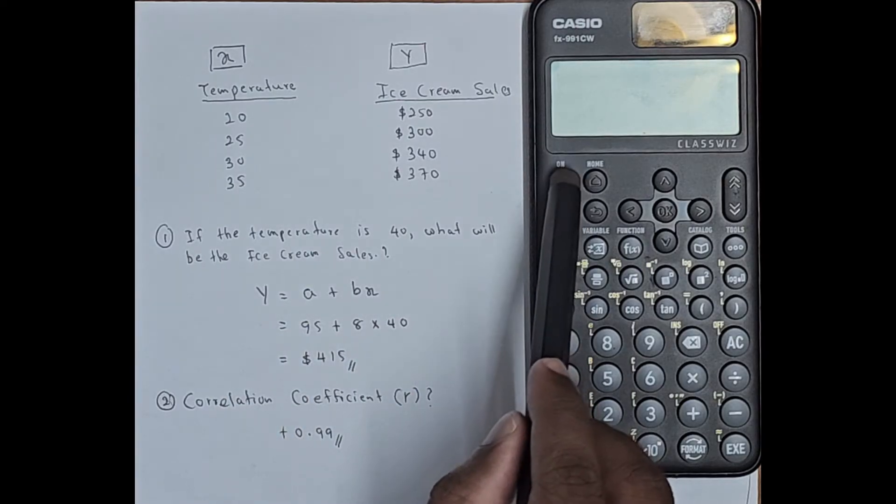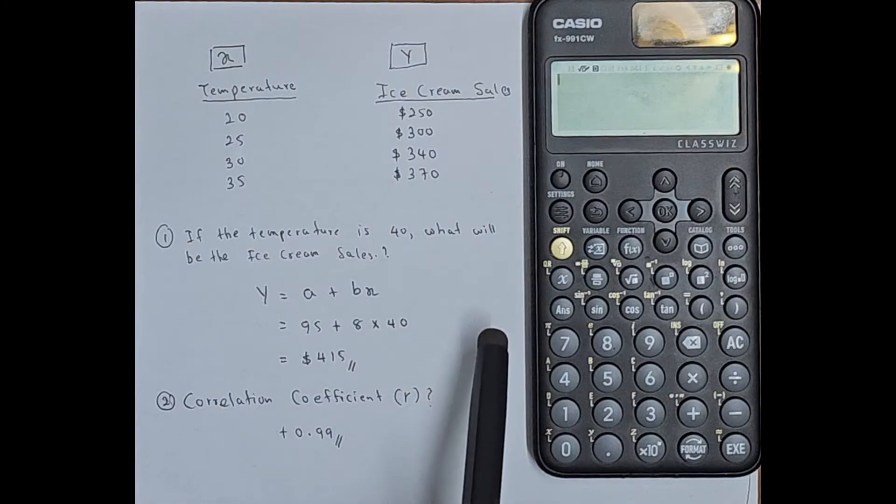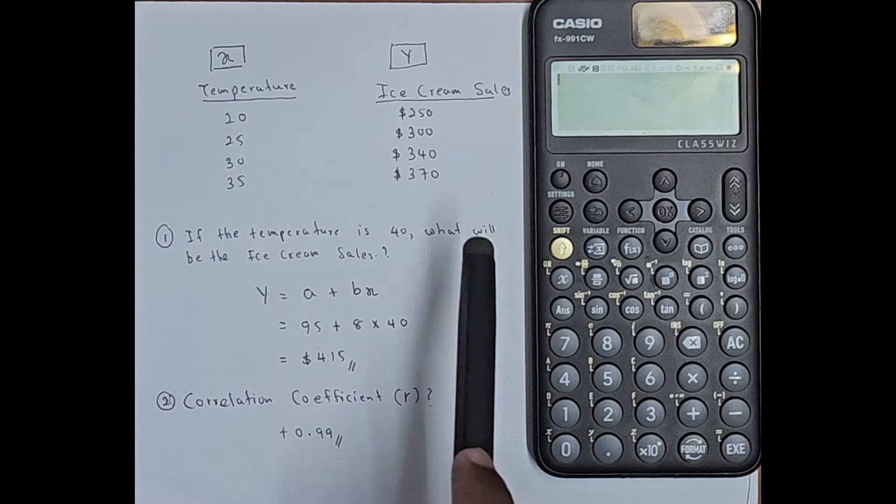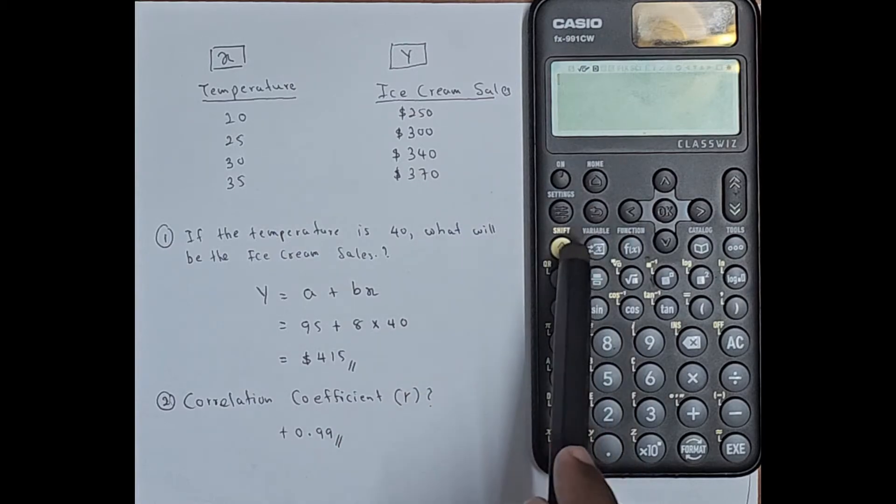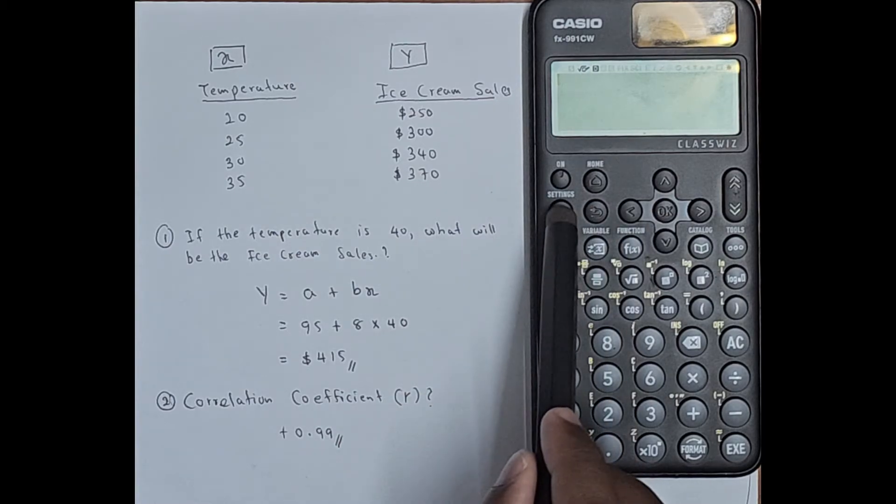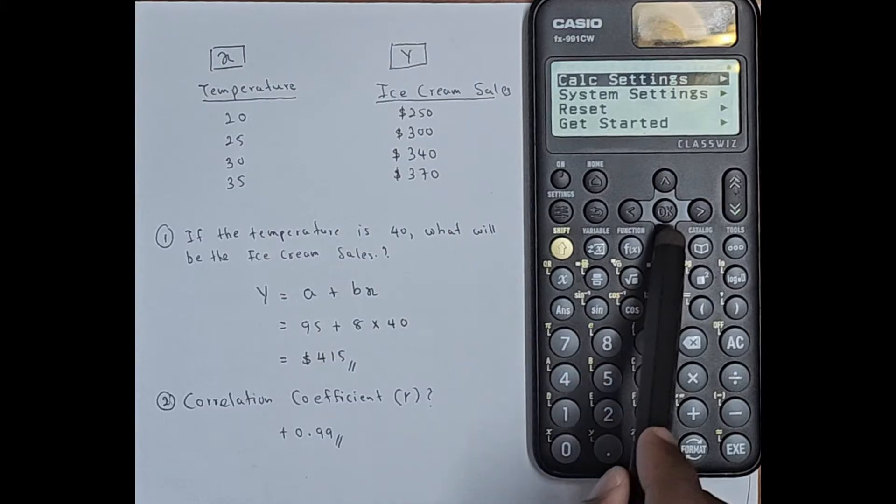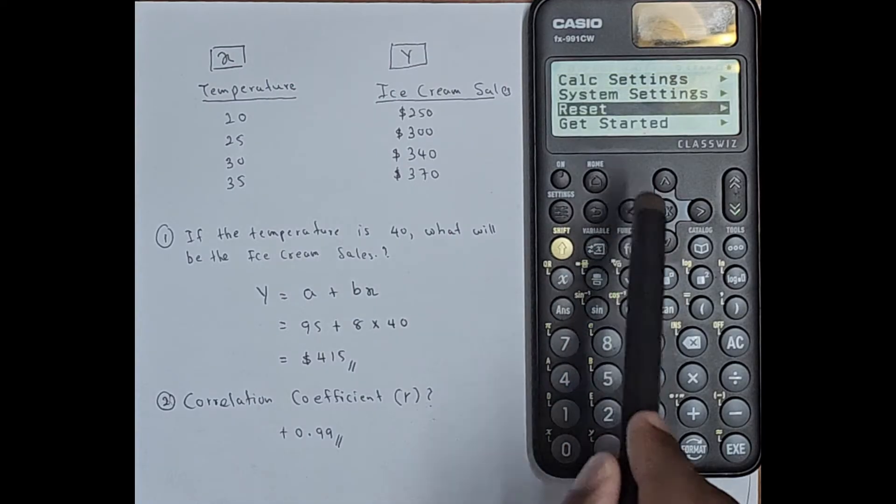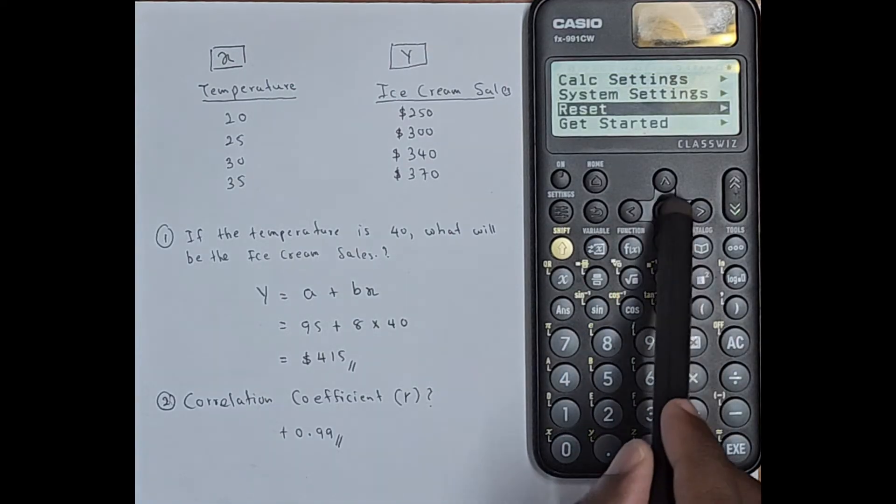Step number one: first you have to turn on the calculator. Once you turn on the calculator it is advisable to reset all the settings. So you can go to this settings tab, click this arrow, and you can see reset. Click that reset.